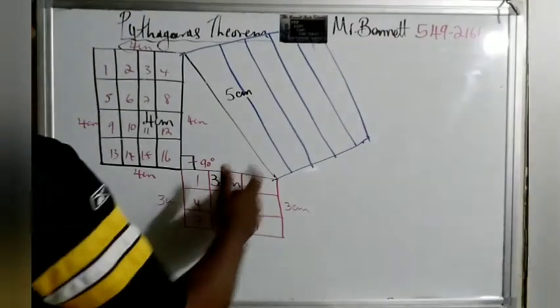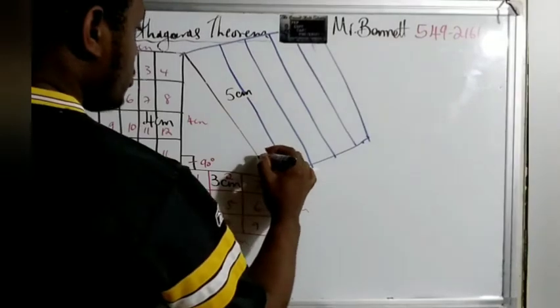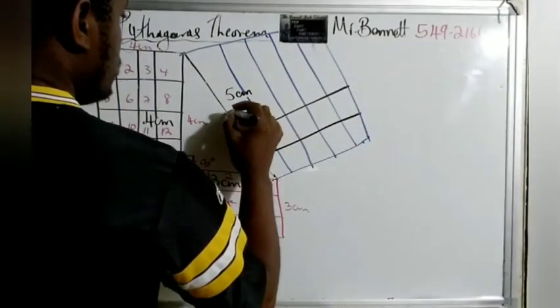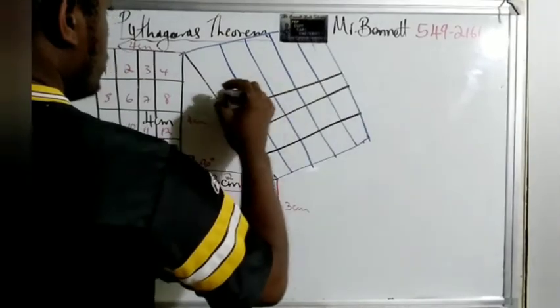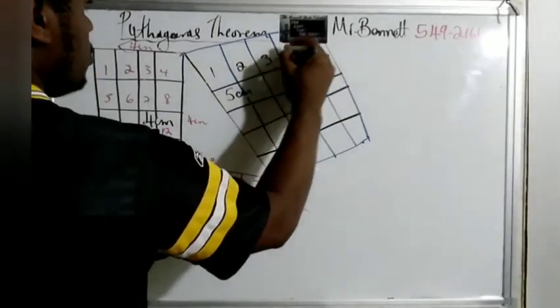What we're going to do is split this up into a 5 by 5 and count the number of squares, then examine the relationship between the numbers. A little bit lean but let's work on it: 1, 2, 3, 4...